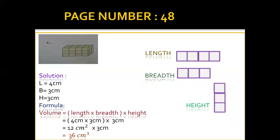Part C: in the front first layer there are four boxes — length is 4. Counting the layers: 1, 2, 3 — height is 3 cm. The right side also shows 3 boxes — breadth is 3 cm. Applying the formula: 4 × 3 × 3 = 36 cm³ is the volume of the given cuboid.